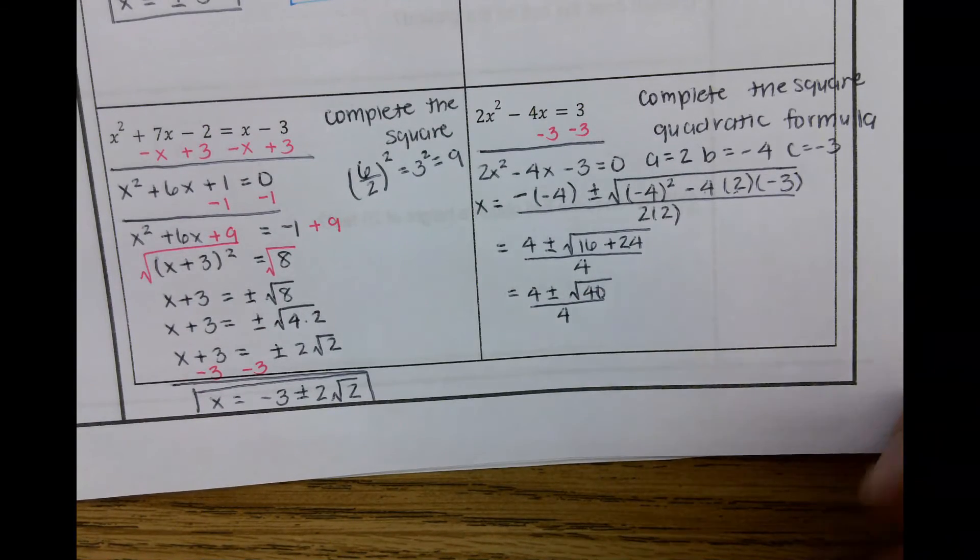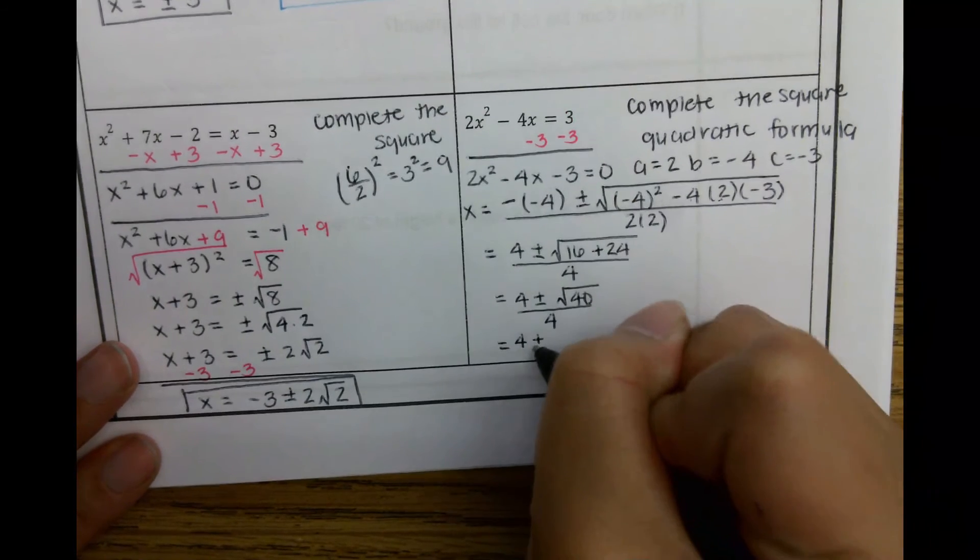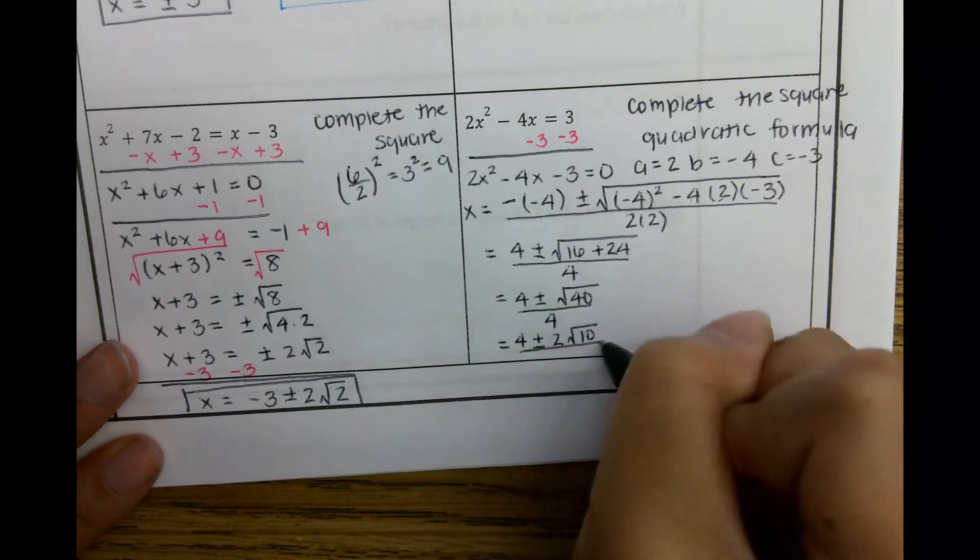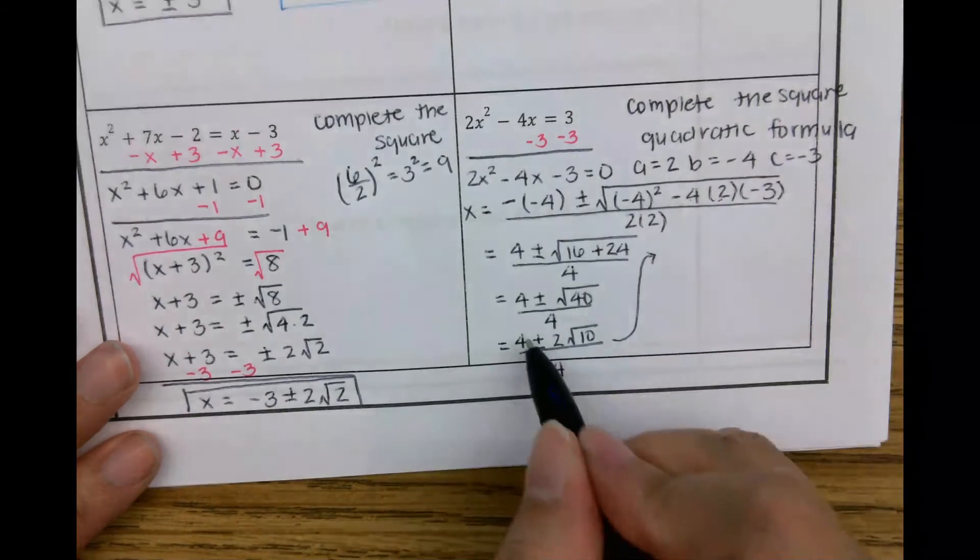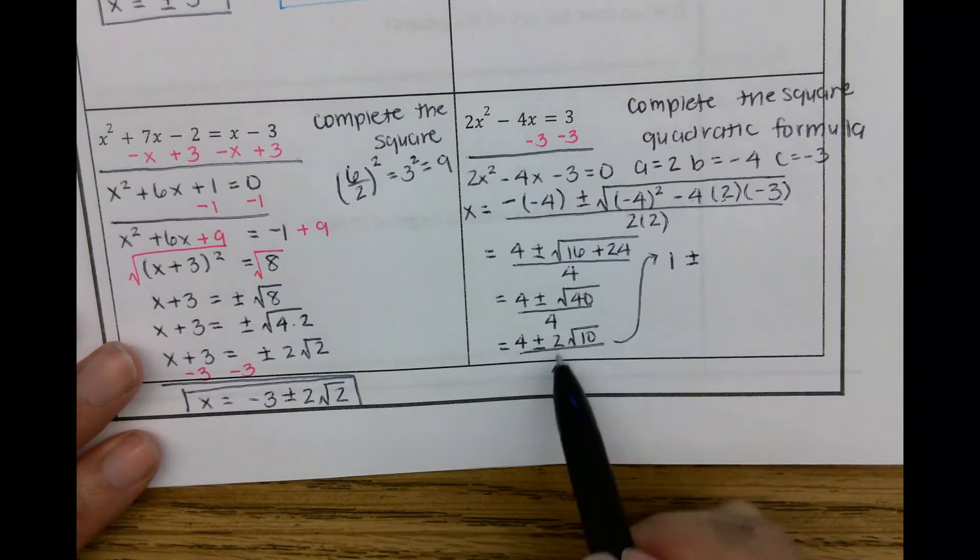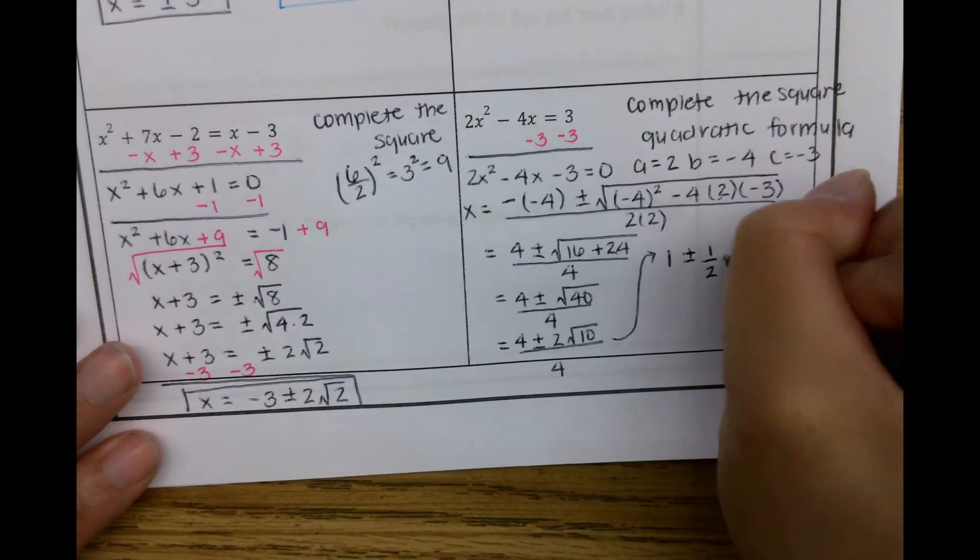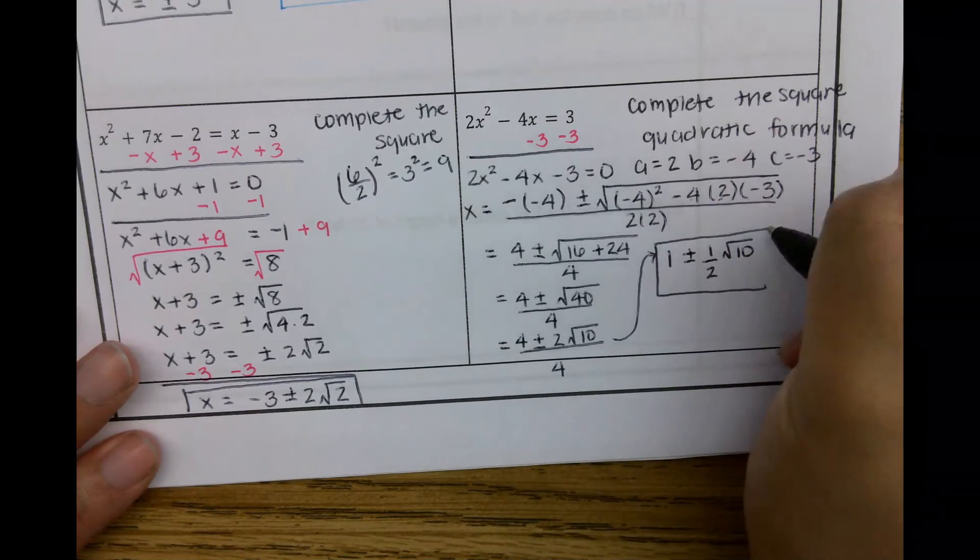So perfect square in 40 is 4. So that would be square root of, that would be 2, square root of 10 over 4. 4 over 4 would be 1, plus or minus. Then 2 over 4 is half. So 1, half square root of 10. Those are your two answers.